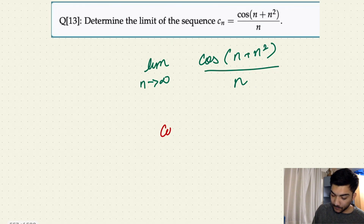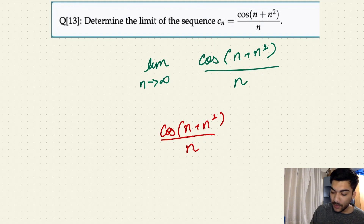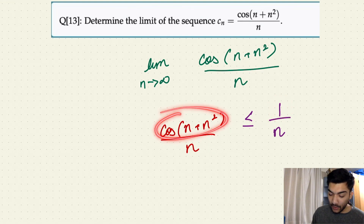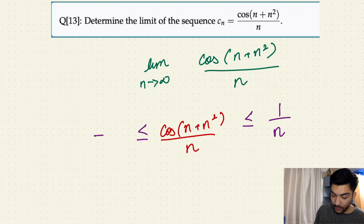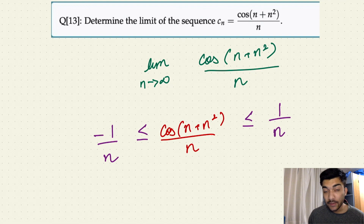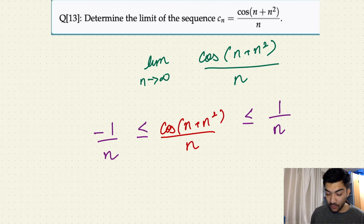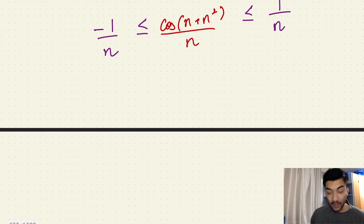That is why we can conclude that cos of n plus n squared upon n is always less than or equal to one over n, because cos of n plus n squared has a maximum value of one and a minimum value of minus one. So we also know it's always greater than or equal to minus one over n. Now we have to calculate, in order to use squeeze theorem, the limit as n tends to infinity for both of these bounding expressions and check whether both limits are equal.